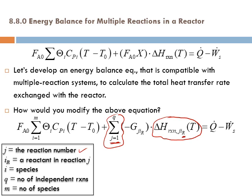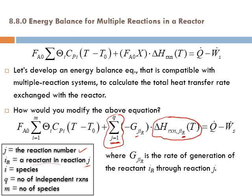Delta H of reaction should be per a given reactant IR, where IR is a reactant in reaction J. We look at delta H of reaction for that reaction per moles of IR reacted, and we multiply by the rate of generation for that reactant IR through that reaction J. G_JIR — subscript JIR — is the rate of generation of reactant IR through reaction J. There is a negative sign because the rate of generation of a reactant is negative, so I put a negative before it to make it positive.